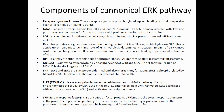One of the major components is the receptor tyrosine kinase, which is a receptor that gets autophosphorylated upon binding to their respective ligands — for example, EGF binding to the EGFR receptor. The next component is GRB2, an adapter protein having two SH3 domains and one SH2 domain. Its SH2 domain interacts with tyrosine-phosphorylated sequences.